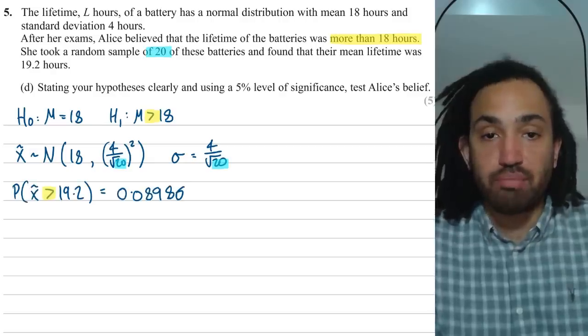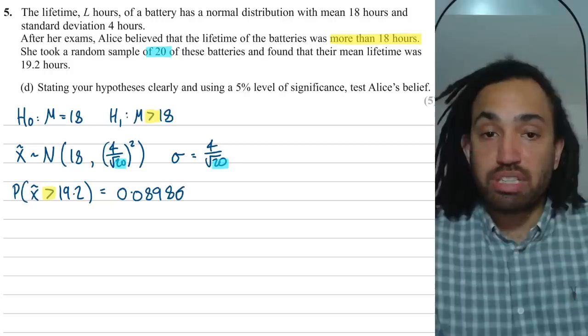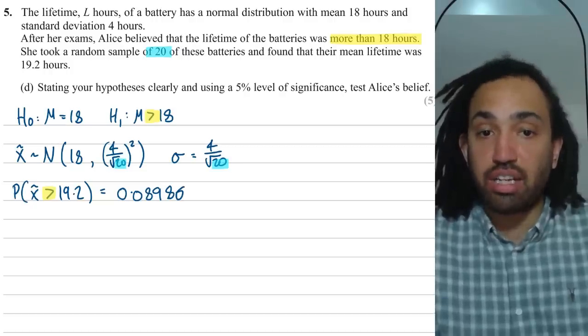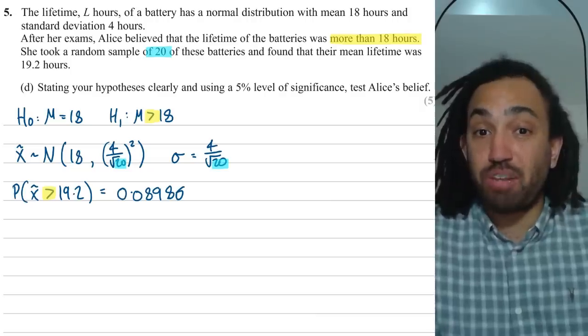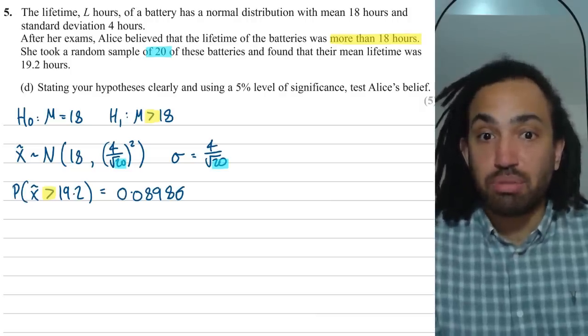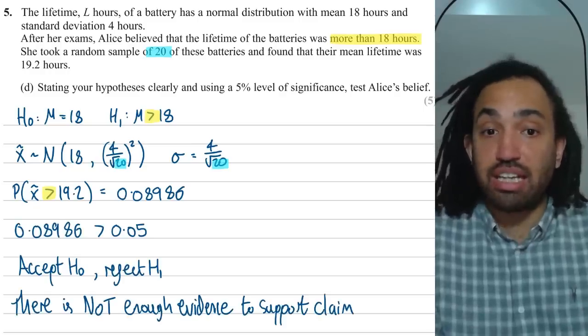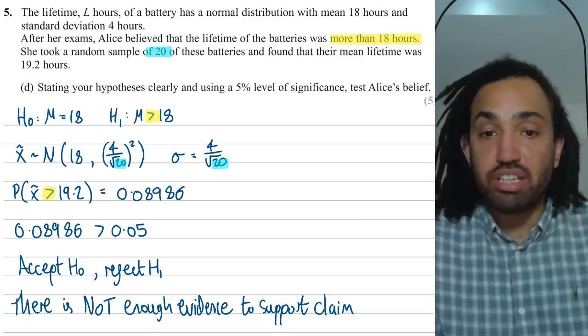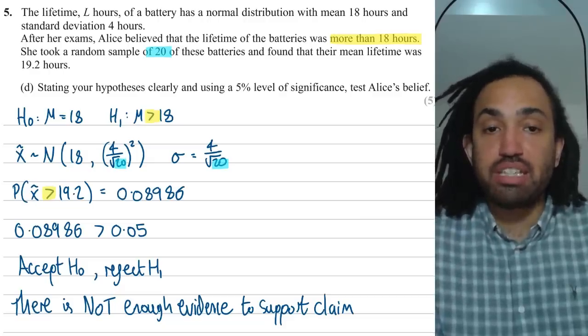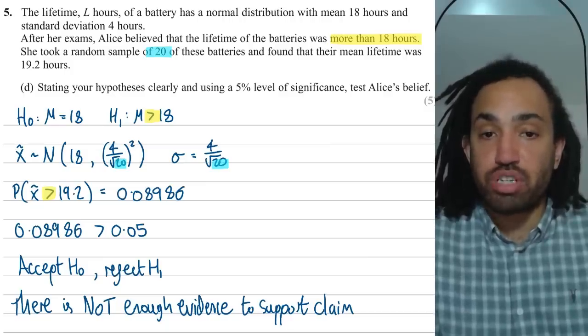Next, I need to work out my probability. So the observed value is 19.2 and I need to work out the probability that we have greater than 19.2 and it will be greater because the alternative hypothesis is greater. Simple. Next, I need to work out that probability and I get like 8.986%. Now, that is greater than the significance level which means that my observed value is likely to happen given the original setting.